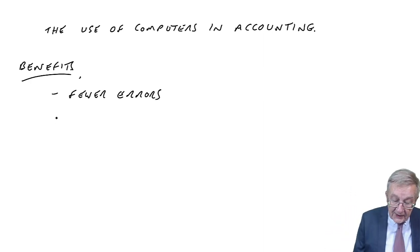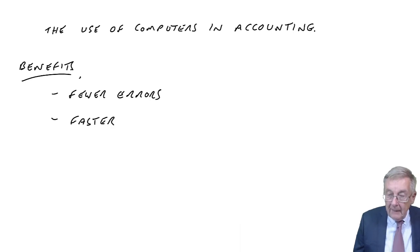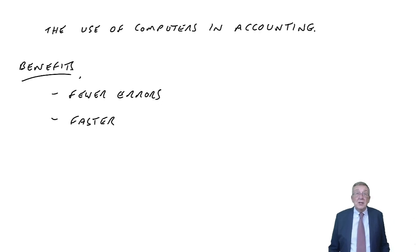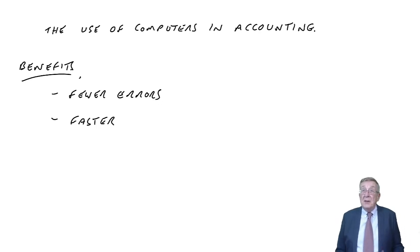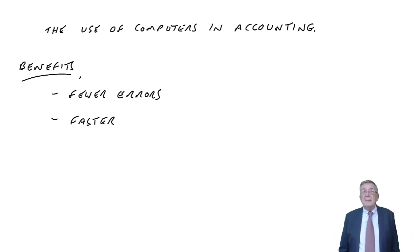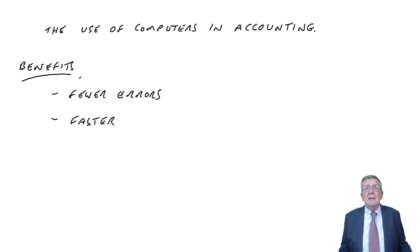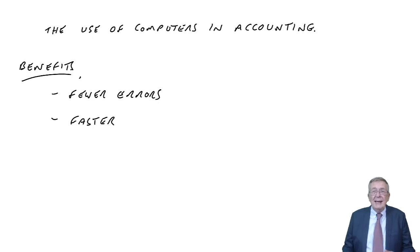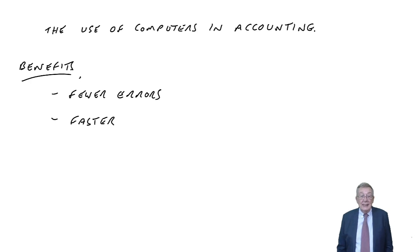Faster processing — that's fairly obvious. The more work being done by the computer, the faster it's going to be, and particularly reporting. If you want a summary of what you've paid in rent over the year, instead of going through by hand and adding things up, the computer can produce the report virtually instantly.